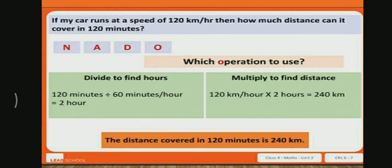Now, multiply to find distance. 120 km per hour multiplied by 2 hours equals 240 km.